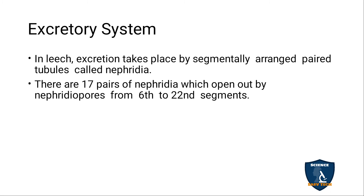The excretory system is segmented, with tubule-like structures called nephridia. There are 17 pairs of nephridia, which open out through nephridiophores, starting from the 6th to the 22nd segment of the leech body.